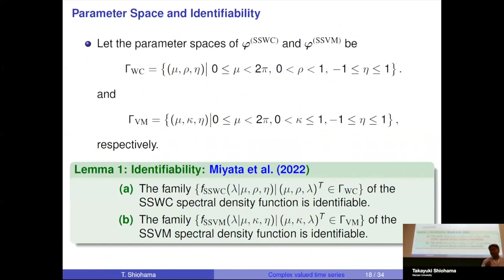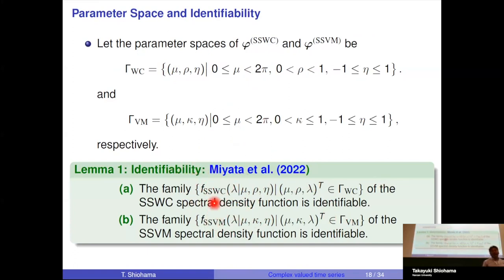We want to estimate the unknown model parameters. There is a result from the literature showing that the sine-skewed wrapped Cauchy and sine-skewed von Mises distributions are identifiable in the circular/directional statistics framework. Using this identifiability result, the sine-skewed wrapped Cauchy and sine-skewed von Mises processes are identifiable in their respective parameter spaces. Note that for the von Mises process, κ > 0, but for invertibility, κ must be less than one, and the skewing parameter has domain [-1, 1].